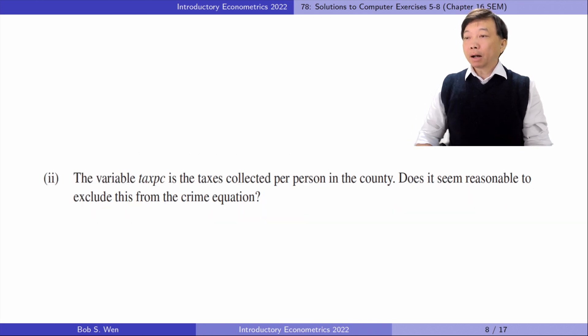In part 2, the variable taxes per capita is the taxes collected per person in the county. Does it seem reasonable to exclude this from the crime equation? Yes, the taxes collected seems not related to the crime rate.